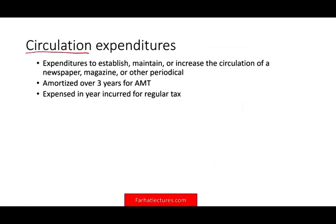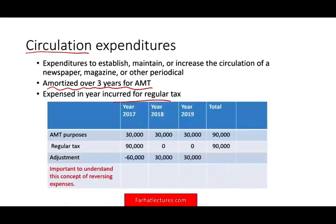An example of an expenditure adjustment is circulation expenditure — expenditure to establish, maintain, or increase the circulation of a newspaper, magazine, or other periodical. For AMT, you have to amortize those over three years. For regular tax, you expense them in the year they are incurred. Let's assume $90,000 in circulation expenditure. For regular tax, you expense the whole $90,000 in year one. For AMT, you split it over three years. So in year one, you'll have a negative AMT adjustment of $60,000 because you took too much deduction. Then in years two and three, you'll have a positive adjustment. In total, for both regular and AMT, you deducted $90,000.